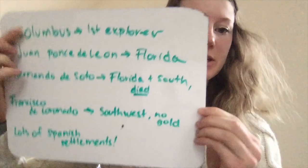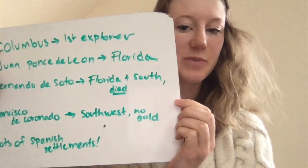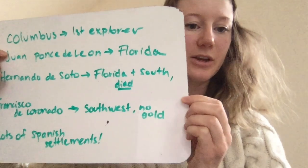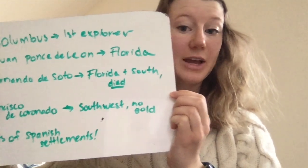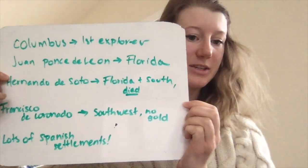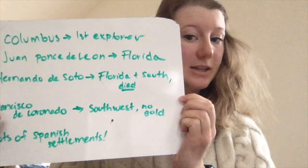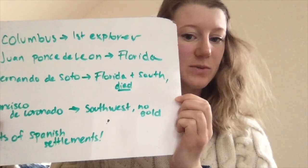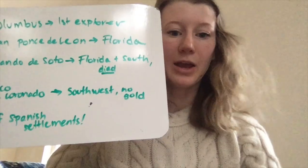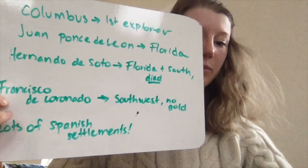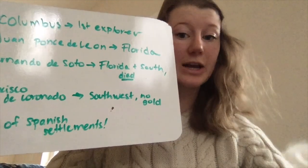Columbus was the first explorer and he went to those islands, Española. Juan Ponce de Leon went to Florida. Hernando de Soto went to Florida and the South — and remember he died in the Mississippi. Francisco de Coronado went to the Southwest, like Arizona and Utah, but he didn't find any gold. And the Spanish settlements were all over the place, like California and Florida and everywhere.